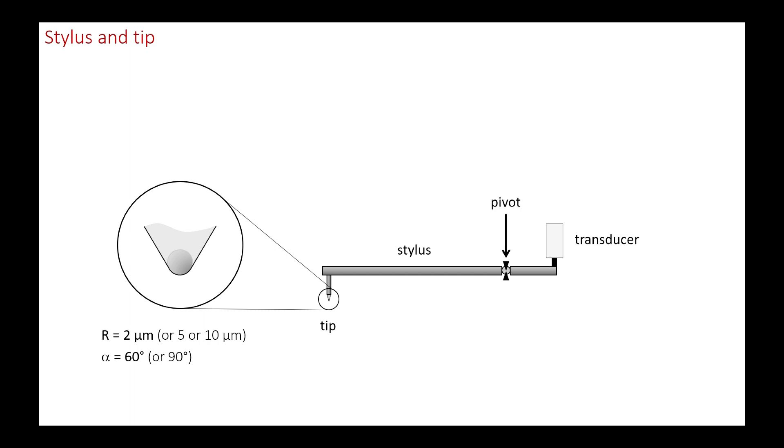The stylus rotates around a pivot. The opposite end of the stylus is connected to a transducer device, responsible for converting the vertical movement of the tip into an electrical signal.